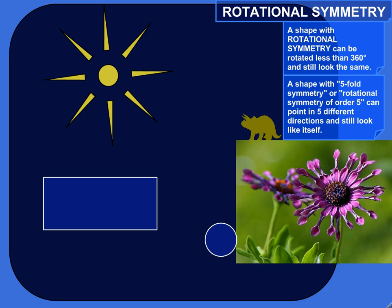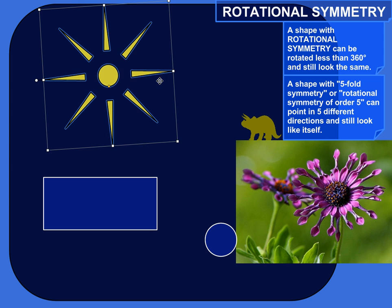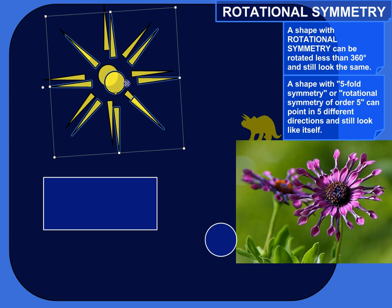So how do you tell if an object has rotational symmetry? Well, you can eyeball it if you have a good eye for symmetry. That's one way to tell. Or you could create a shape and rotate it. So that's what I'm going to do here.